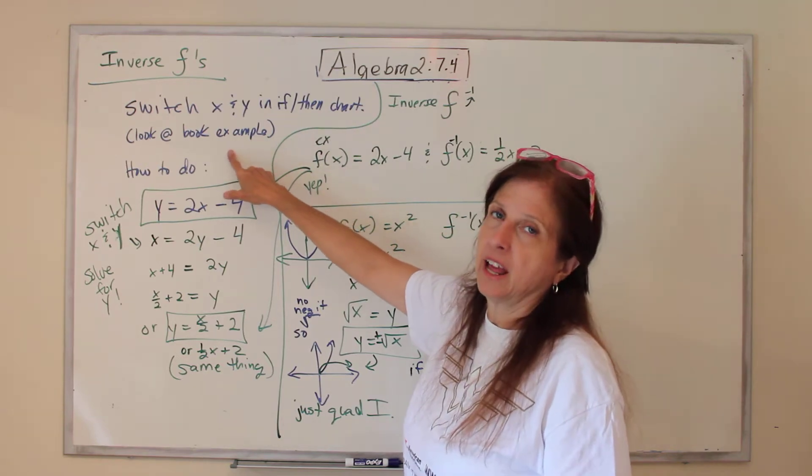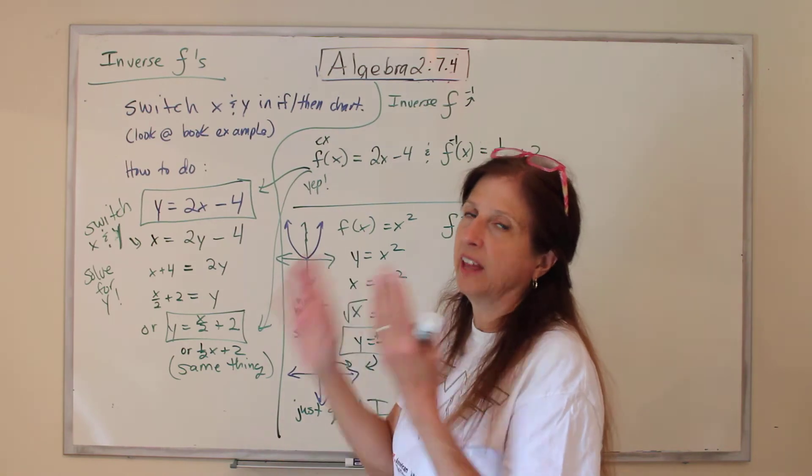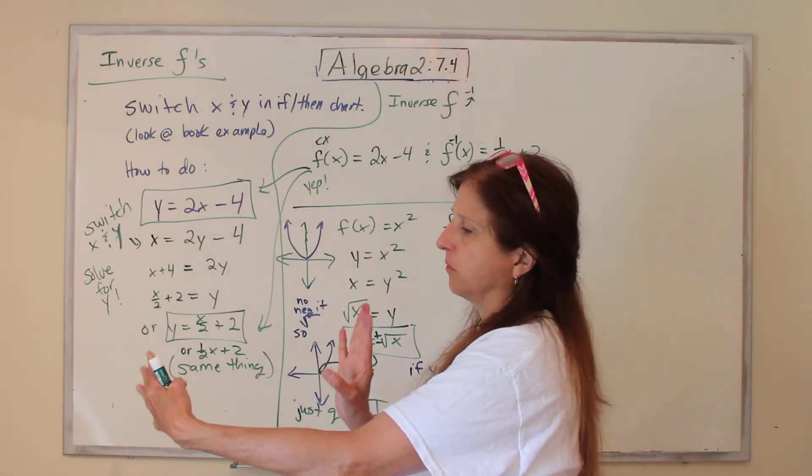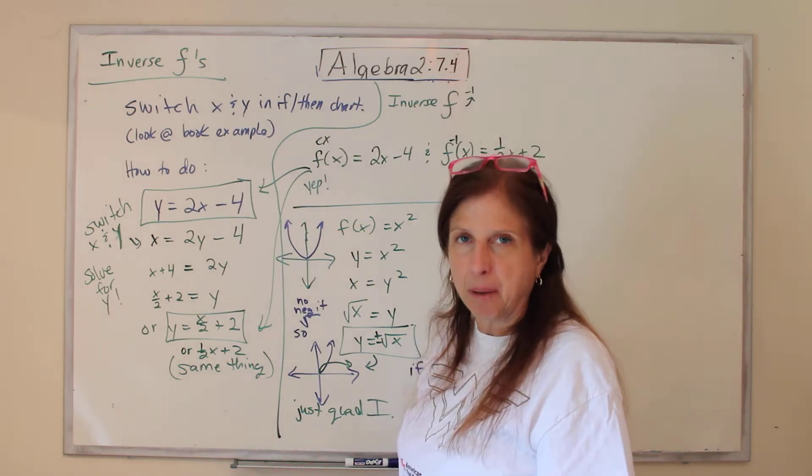Look at the book, they will show you how they did that. They have an if-then chart, then they switch the column of X's and the column of Y's, graphed it again, and got the inverse. But that's not how you really do it. That's the baby step way.